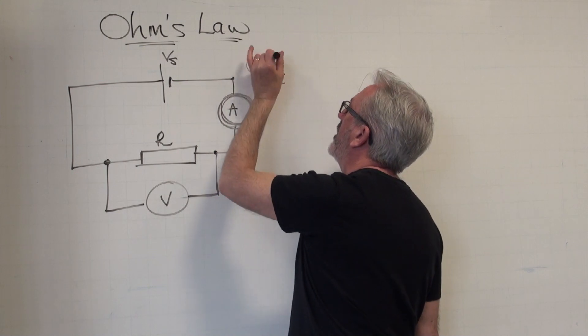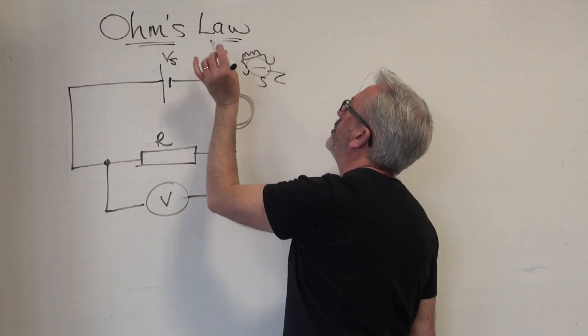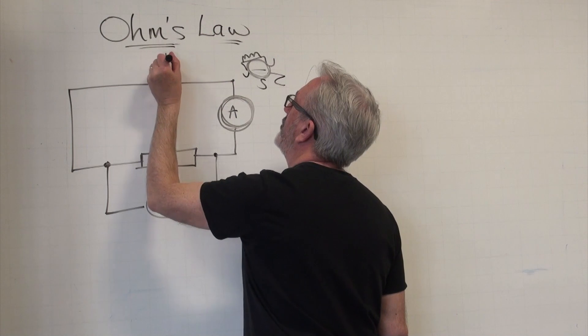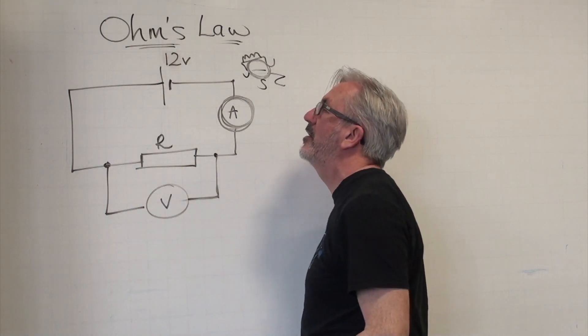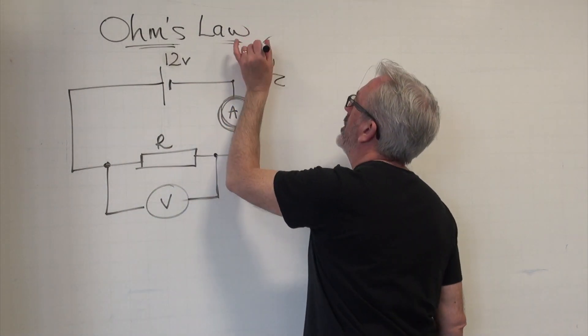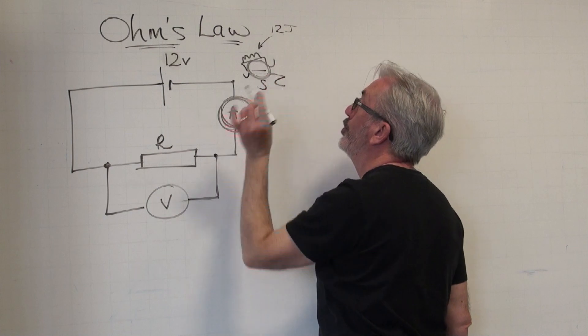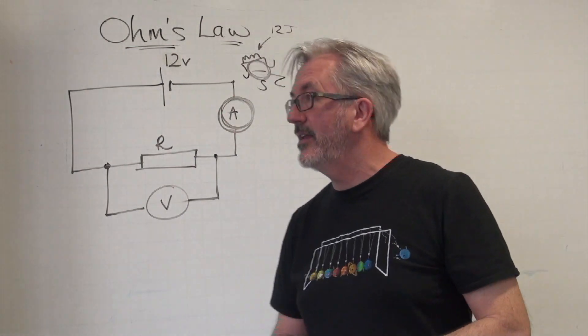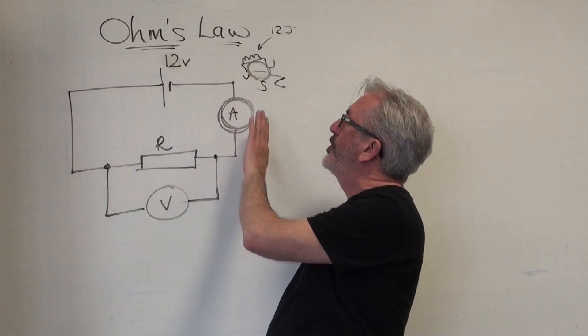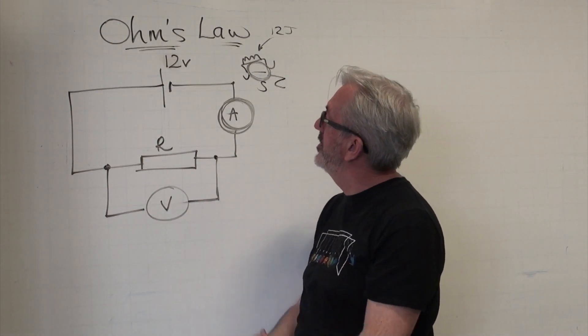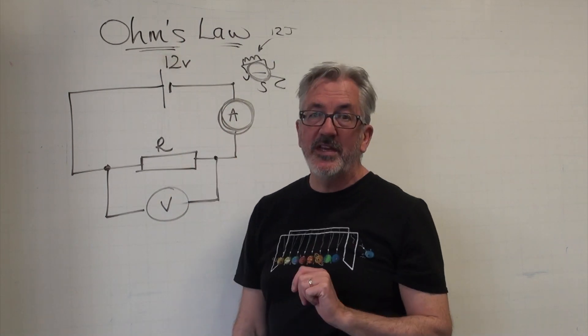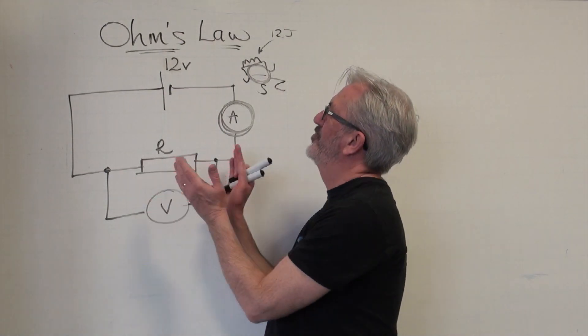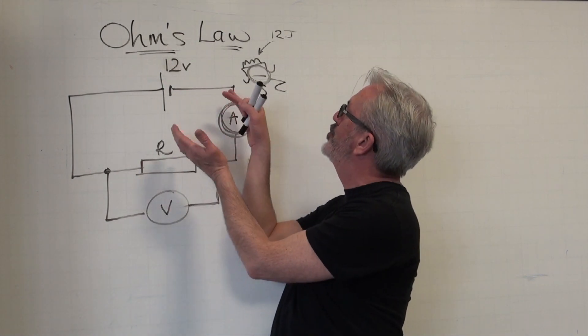Remember, charge moves around the circuit. Charge carries energy. The amount of energy that each charge carries depends on the size of the supply voltage. If it is 12 volts, then each little coulomb of charge is carrying 12 joules and it delivers that energy as it goes around the circuit. The rate at which it delivers that energy, or the speed if you like, the number of coulombs per second that's flowing around the circuit is called the current.